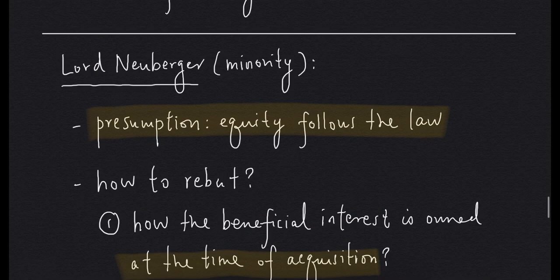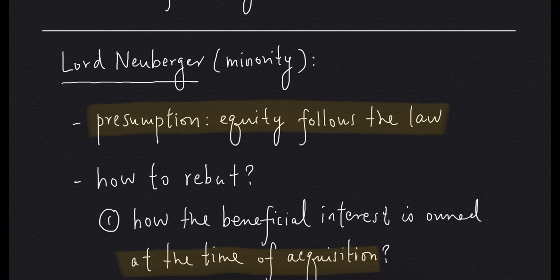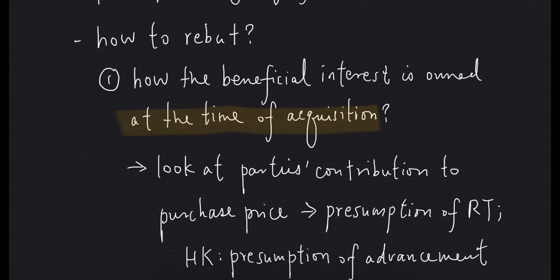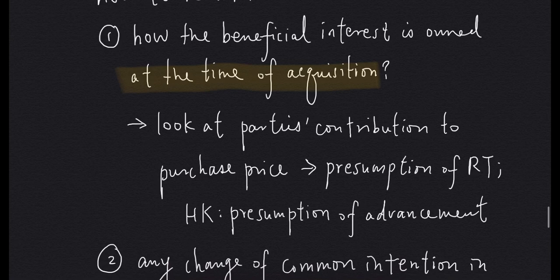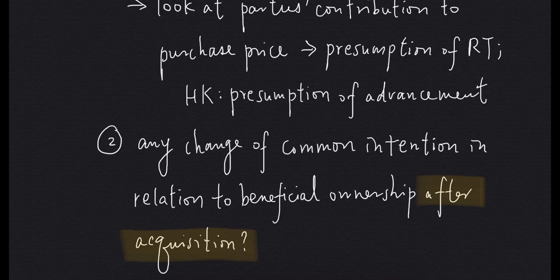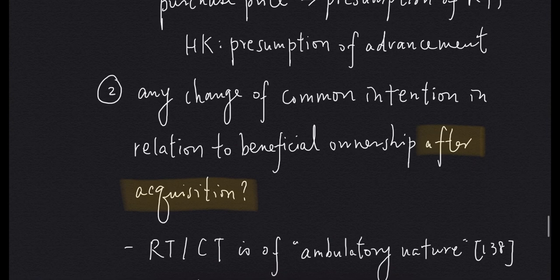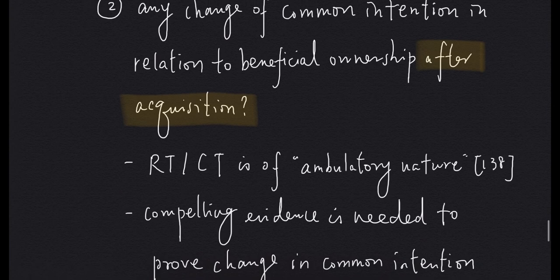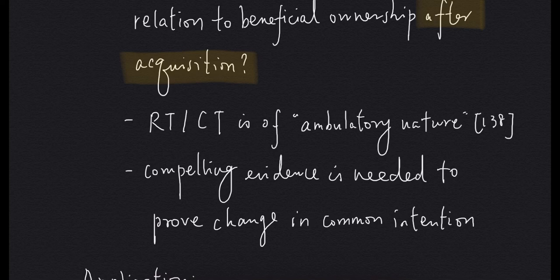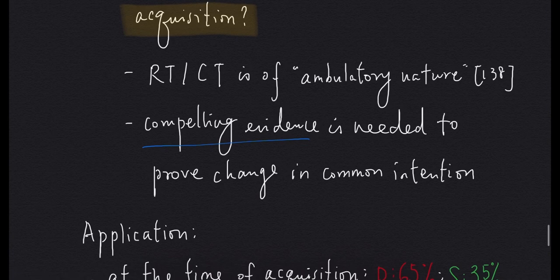This is the majority approach. Now let's move on to the minority approach. According to Lord Neuberger, the starting point is also equity follows the law. But what marks the difference between the majority and minority approach is how to rebut this presumption. According to Lord Neuberger, we first have to ask how the beneficial interest is owned at the time of acquisition, by looking at the parties' contribution to the purchase price. This is when the presumption of resulting trust — and for the case of Hong Kong, the presumption of advancement — comes into play. After asking how the parties intended the share to be divided at the time of acquisition, we ask whether there is any change in their common intention after acquisition. We need compelling evidence to prove such a change, looking at the whole course of conduct of the parties.